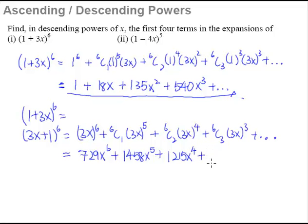So last one, alright? From the calculator, 6C3 is a 20 and 3^3 is 27. So 20 multiplied by 27, that will give us 540x^3. So this is how we expand in order to get a descending powers of x.